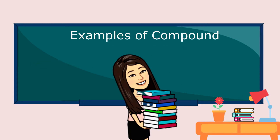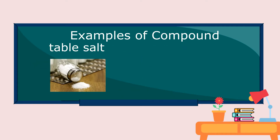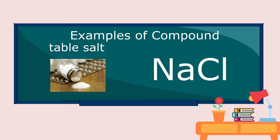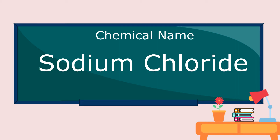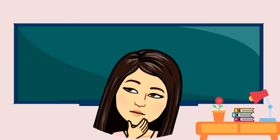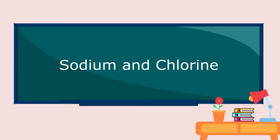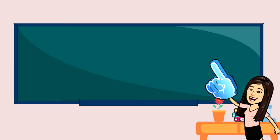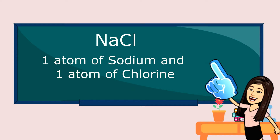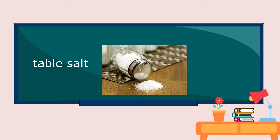Another example: table salt. Chemical formula: NaCl. Chemical name: sodium chloride. So what are the elements combined to form table salt? Sodium and chlorine. We have one atom of sodium and one atom of chlorine. So table salt is another example of a compound.